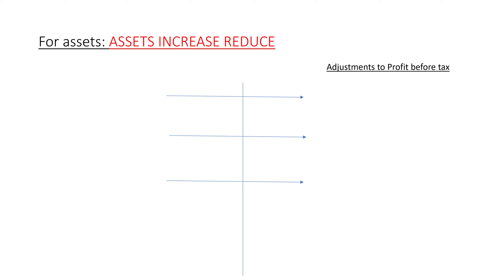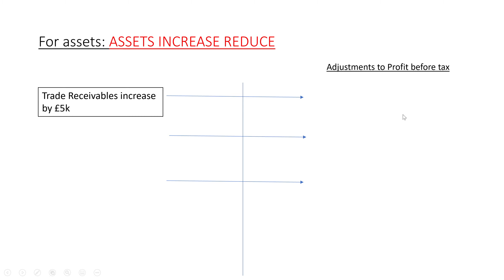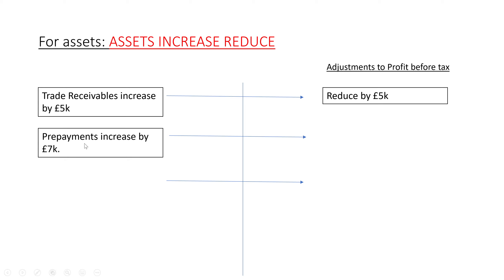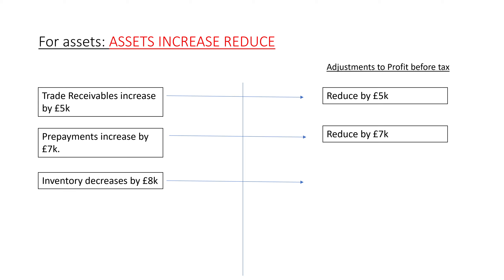For assets, the rule is: if we increase an asset, we reduce profit before tax to arrive at the cash figure. If trade receivables increase by £5K, you reduce by £5K — a higher trade receivable balance means more unpaid amounts, so cash inflows are lower. Similarly, if prepayments increase by £7K, reduce by £7K, because prepaying means more cash outflow. If inventory decreases by £8K, you increase by £8K — spending less on inventory means less cash outflow.